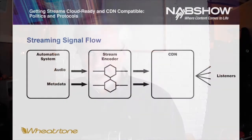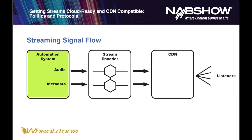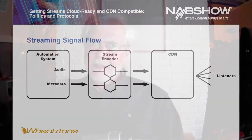With the streaming signal chain, we start at the same place — we still have an automation system with metadata. Both of these are now going to the stream encoder, which is also called an origin server from the viewpoint of the CDN. The CDN is the content distribution network — basically a bunch of servers out in the cloud, located in different geographical places around the country and the world. The stream encoder is taking the place of the FM processor, and the CDN is taking the place of the transmitter.